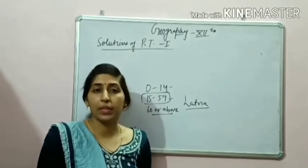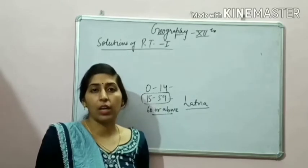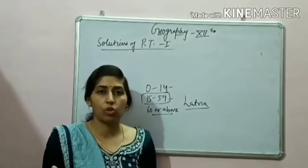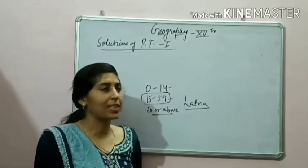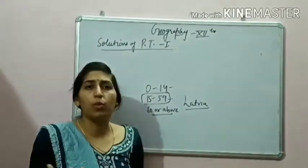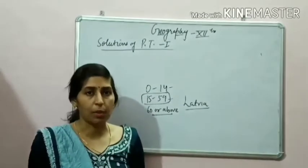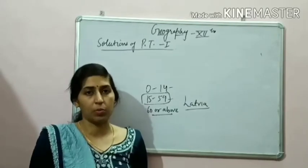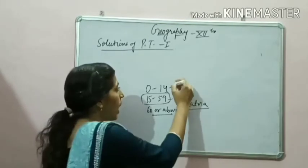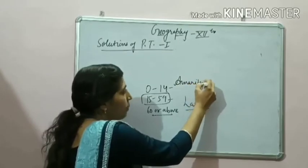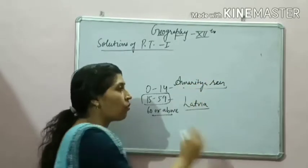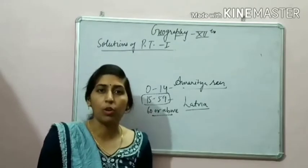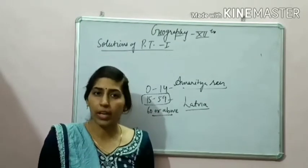The next question is: which Indian economist gave the idea of human development? The first theory of human development was given by Mahbub ul Haq, who belonged to Pakistan. But here the question specifies an Indian economist, so the correct answer is Amartya Sen. Amartya Sen was the first Indian economist who gave the theory regarding human development.